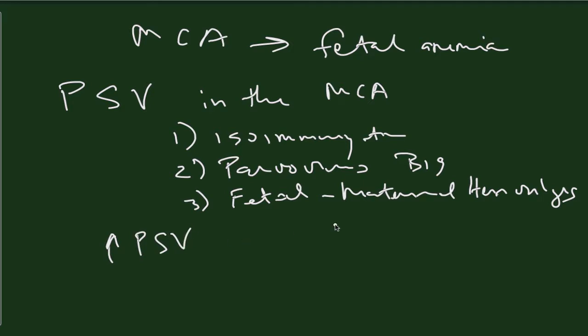When peak systolic velocities are greater than 1.50 multiples of the median for the gestational age, there is 100% specificity of the possibility of having a baby with fetal anemia. The sensitivity is still low, but the specificity is extraordinarily high.